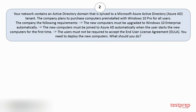Question number two. Your network contains an Active Directory domain that is synced to a Microsoft Azure Active Directory tenant. The company plans to purchase computers pre-installed with Windows 10 Pro for all users. The company has the following requirements: 1. The new computers must be upgraded to Windows 10 Enterprise automatically. 2. The new computers must be joined to Azure AD automatically when the user starts the new computers for the first time. 3. The users must not be required to accept the end-user license agreement. You need to deploy the new computers. What should you do?